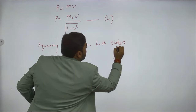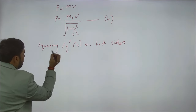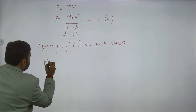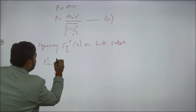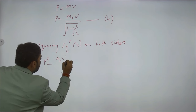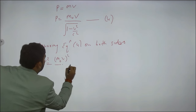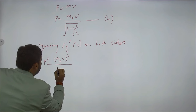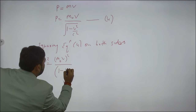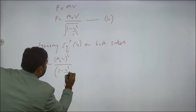Squaring equation number four on both sides, what we get is P² = (M₀V)² / (1 − v²/c²).